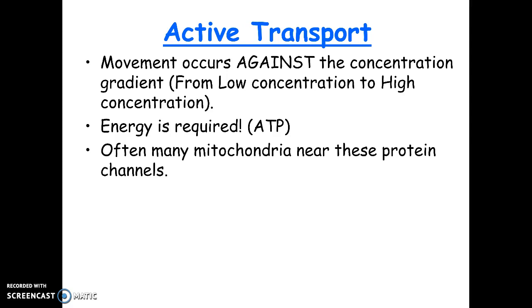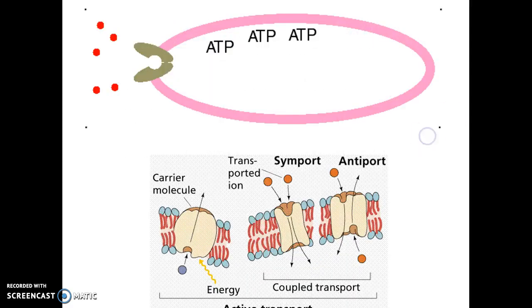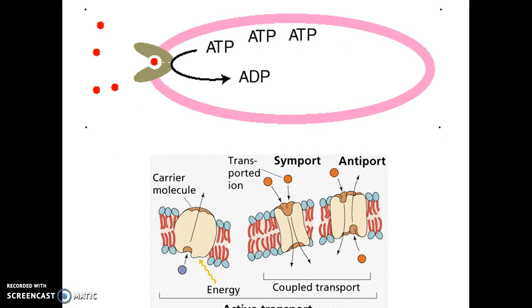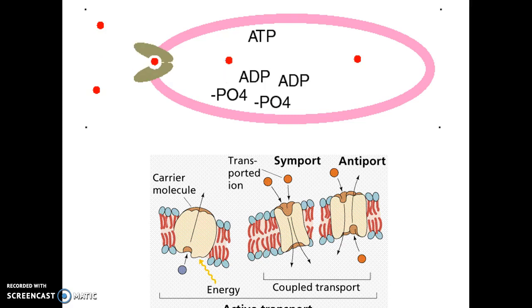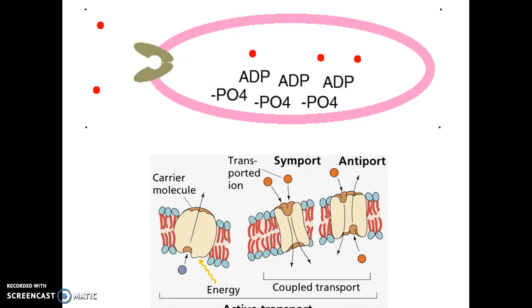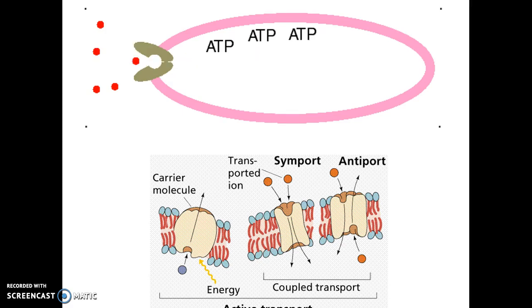The most common textbook example of active transport is the sodium-potassium pump. In an illustration of active transport, you can see how the molecule ATP comes in, the phosphate breaks off of ATP, and that's how it provides energy — allowing this particular protein to transport something through.